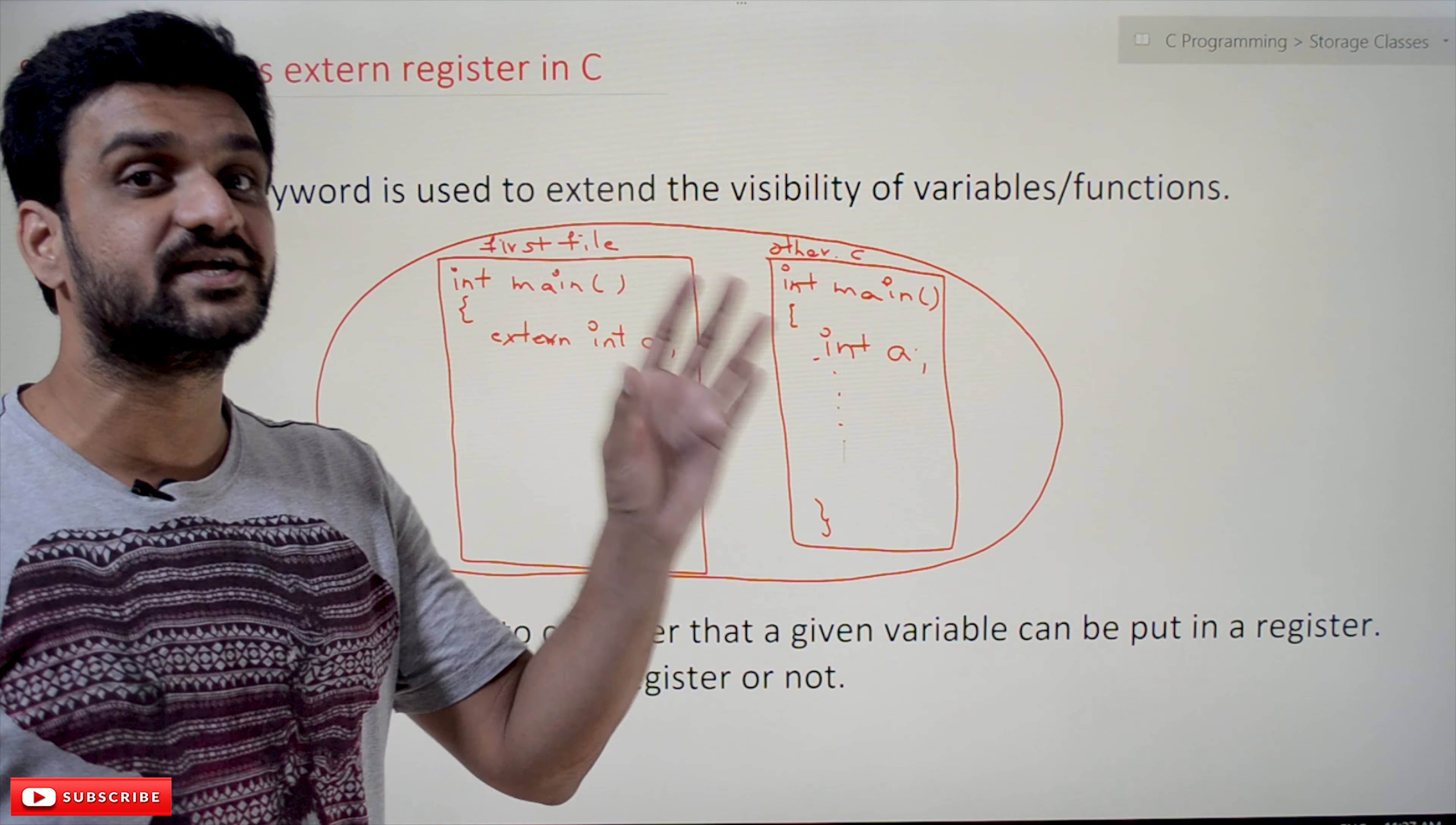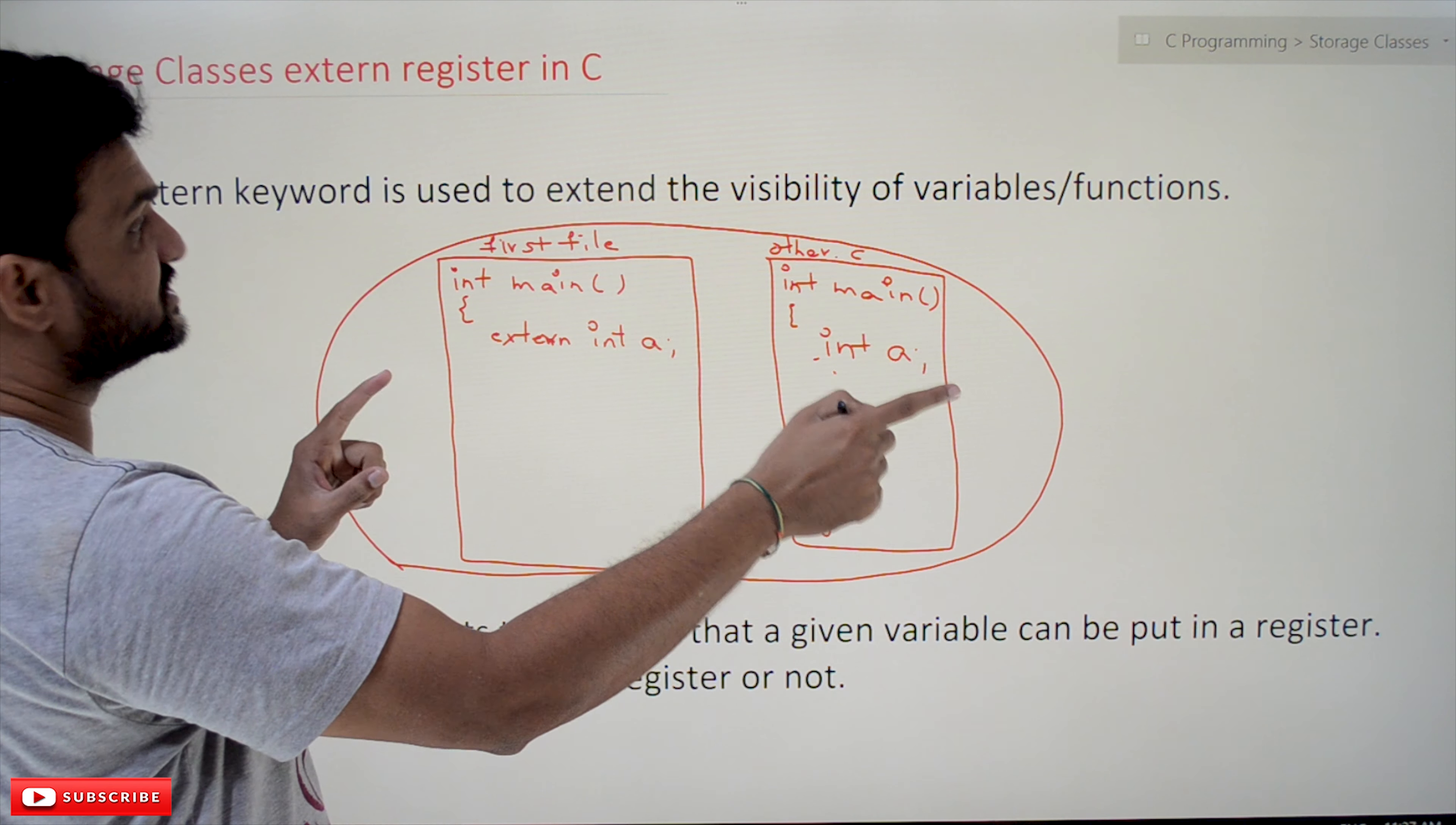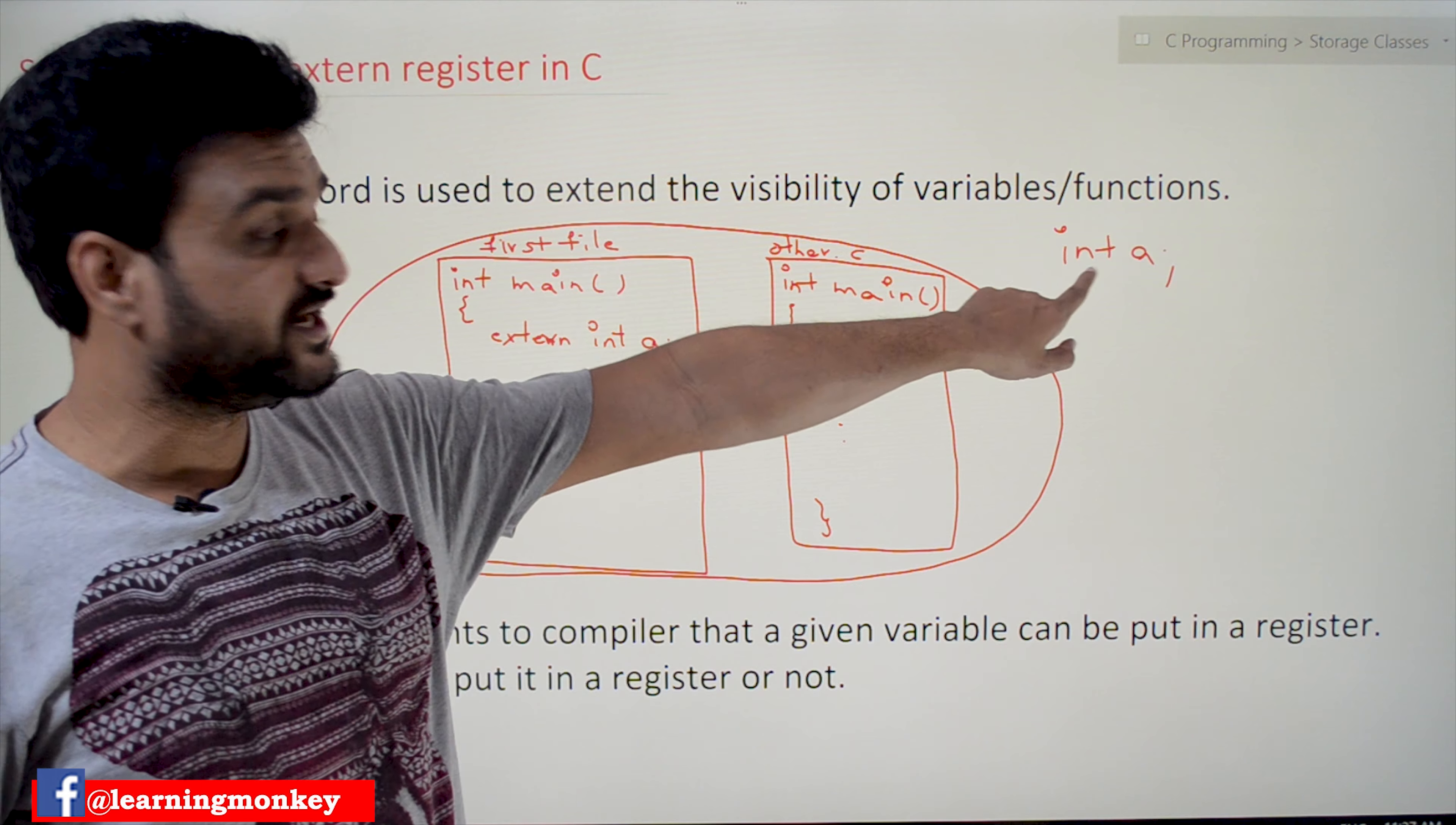Now let's try to understand extern keyword. Before understanding extern keyword, we will try to understand variable declaration and definition. The difference between declaration and definition which we have already discussed - just for recapping the concept, we will try to understand that concept again because it is very much helpful for you to understand the extern concept.